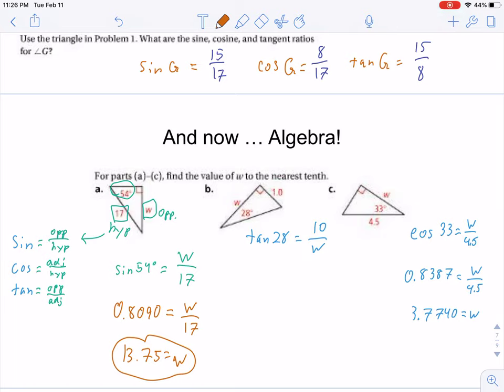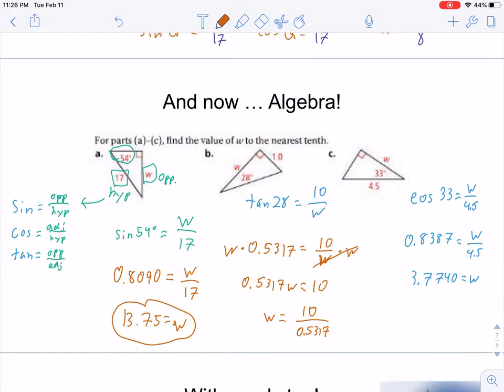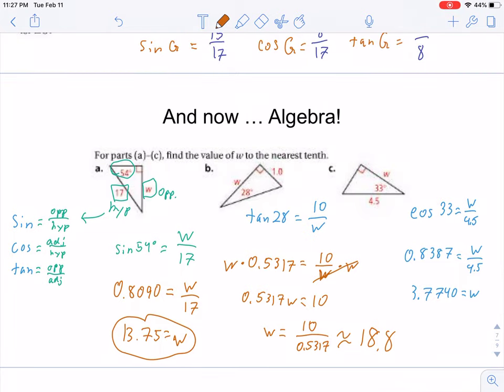It's a bit trickier when the variable is in the denominator. I'm going to show my work here, even though I usually wouldn't. And so, get about 18.8. And that's what we're going to do for homework tonight.